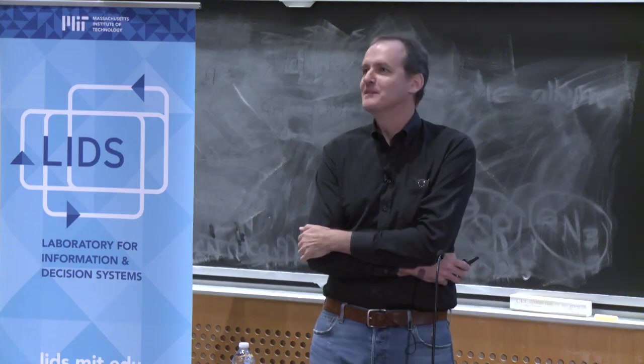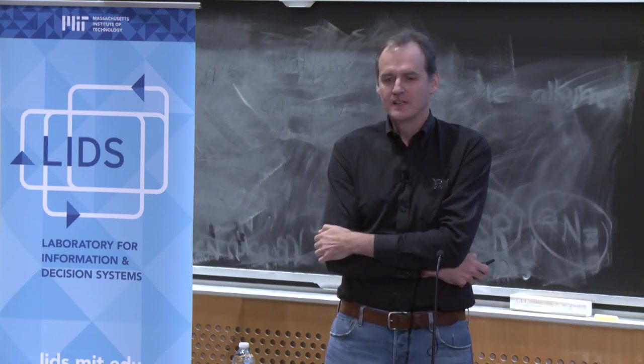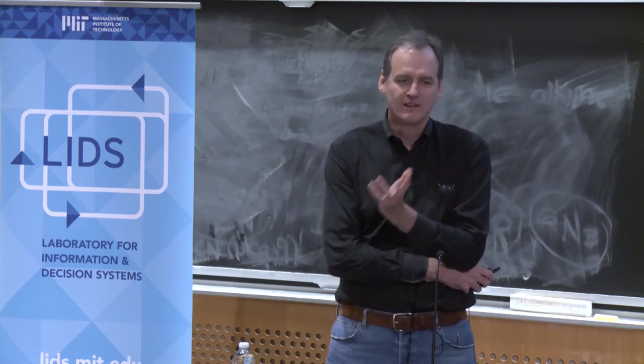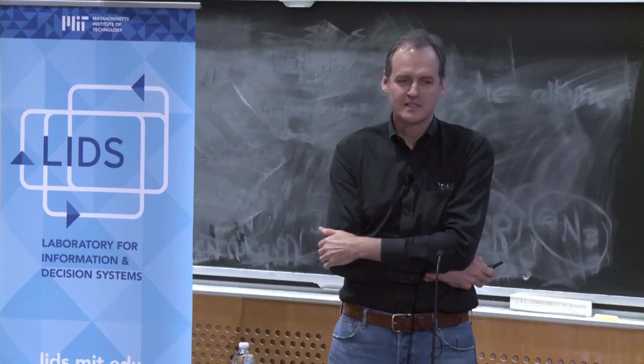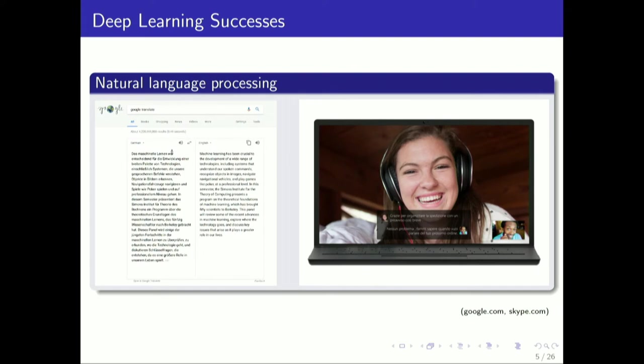Of course, everybody's seen these huge successes that deep learning methods have had, the most successful commercial systems for labeling objects in images, for speech recognition, for machine translation. These are all based on deep neural networks now. That's a huge change over the last few years. They've had an enormous impact.